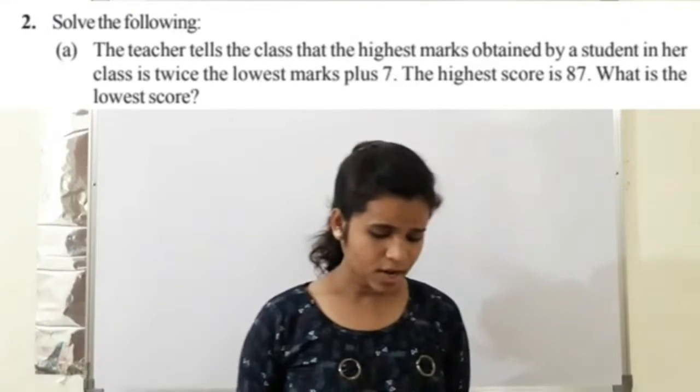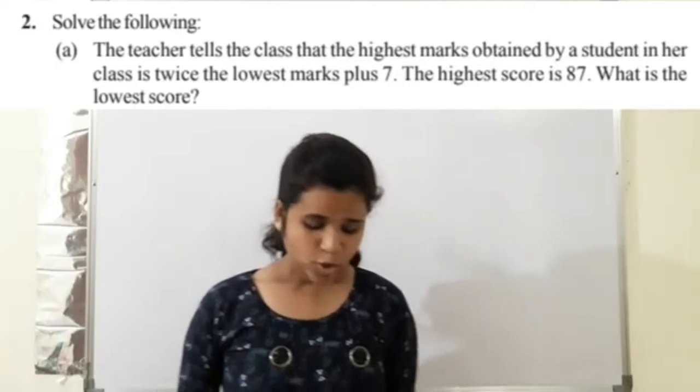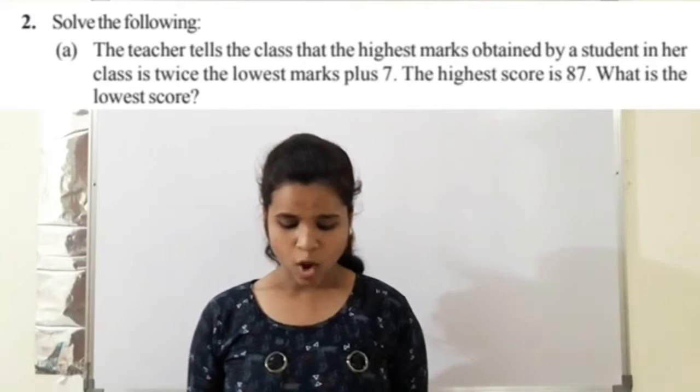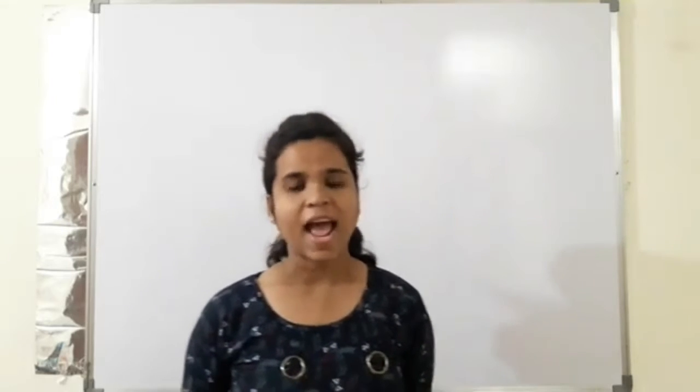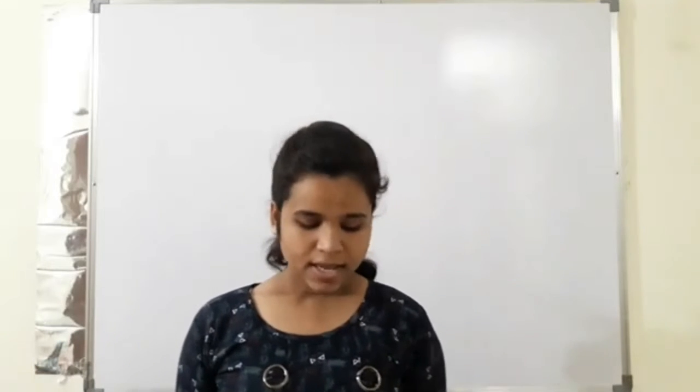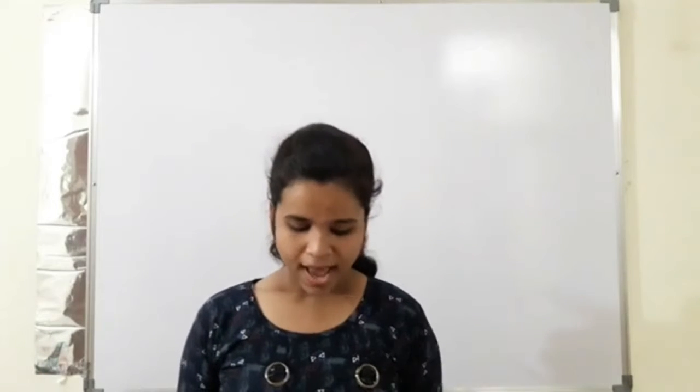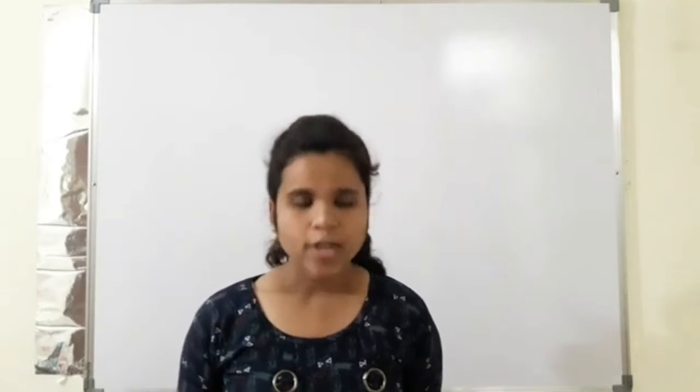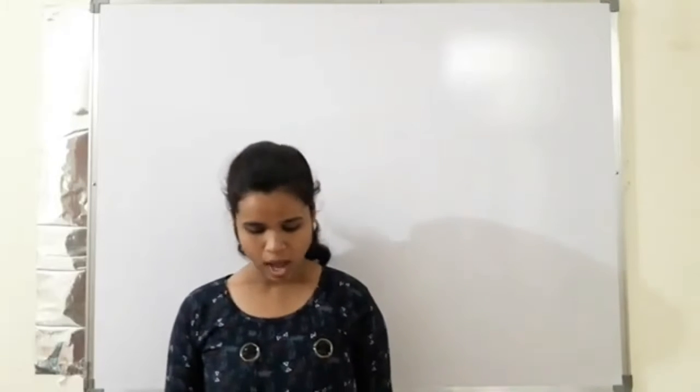What is the meaning of the question? Teacher tells the class that the highest marks obtained by a student in her class is twice the lowest marks plus 7. It is two times. If you add 7 to it, the highest score is 87. So what is the lowest score?